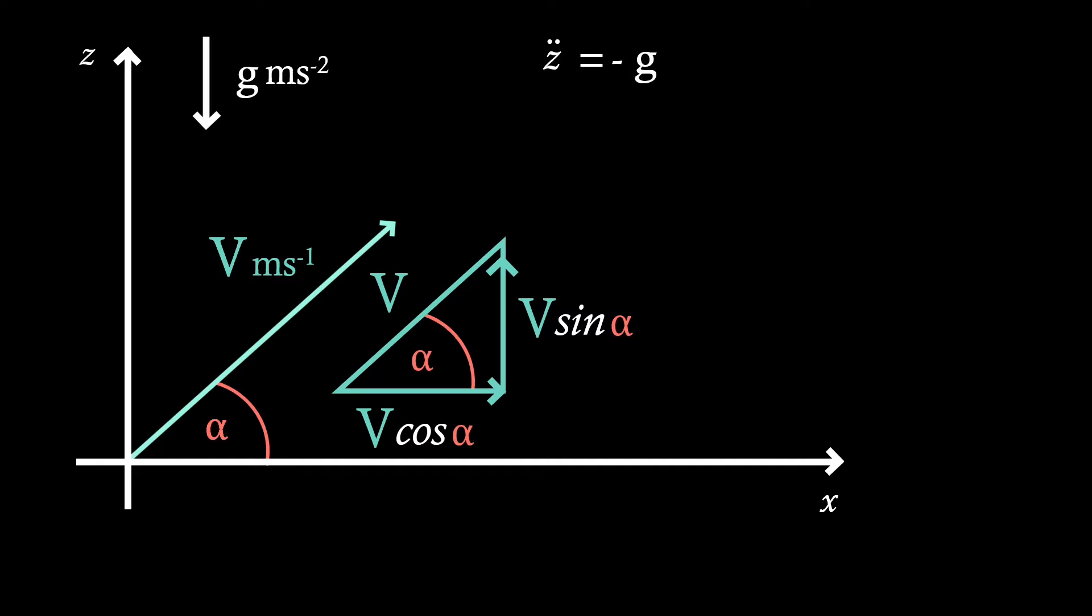Therefore, if we integrate with respect to time, we find we get minus gt plus the constant c. Now evaluating at t equals zero, we see that the constant is just v sin alpha. Now integrating with respect to time, we see that we get z equals vt sin alpha minus a half gt squared plus some constant c. But then if we evaluate t equals zero again, we find that this constant is zero.